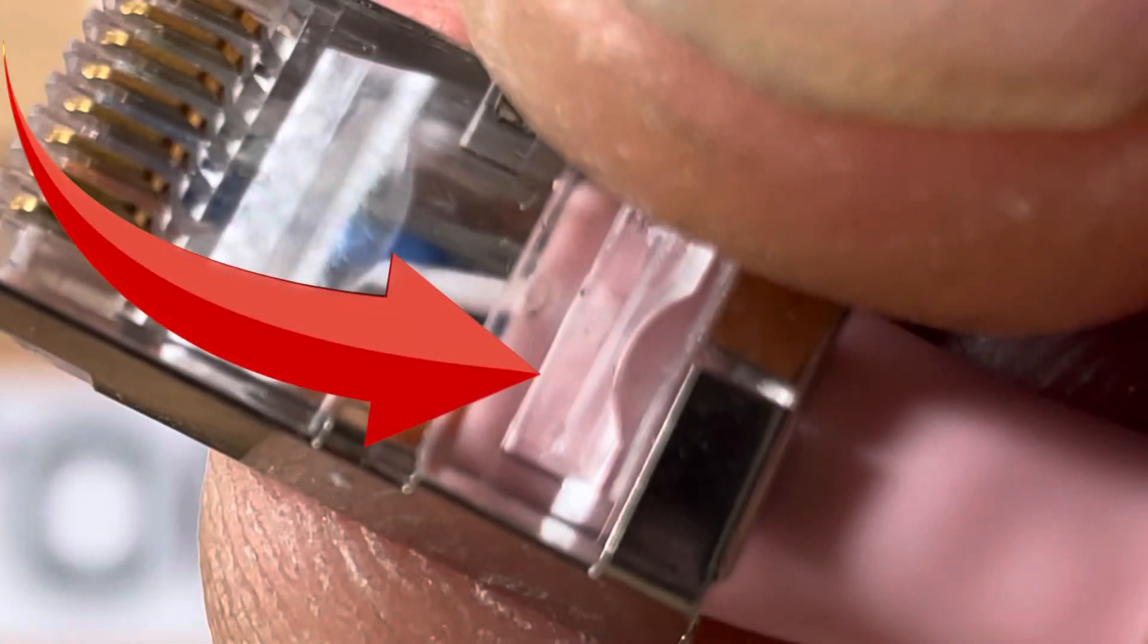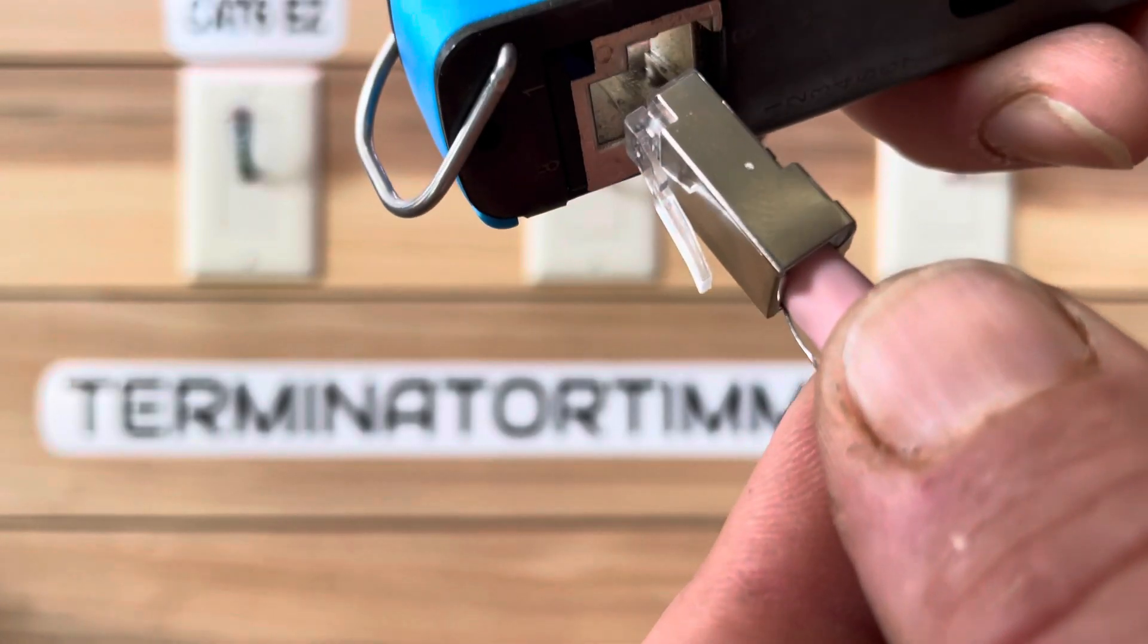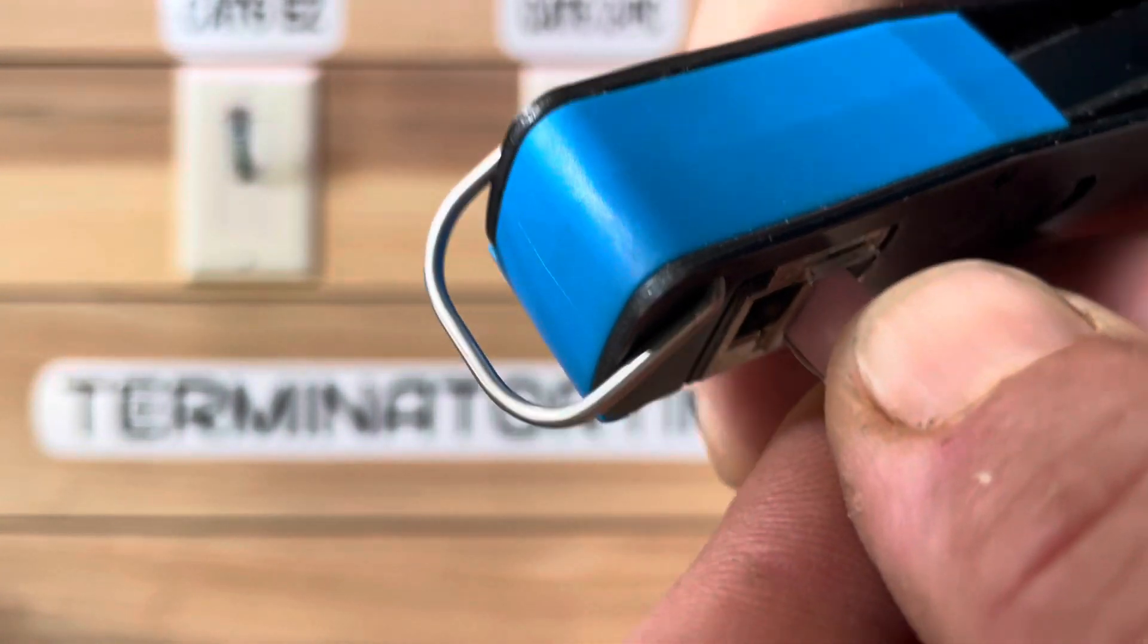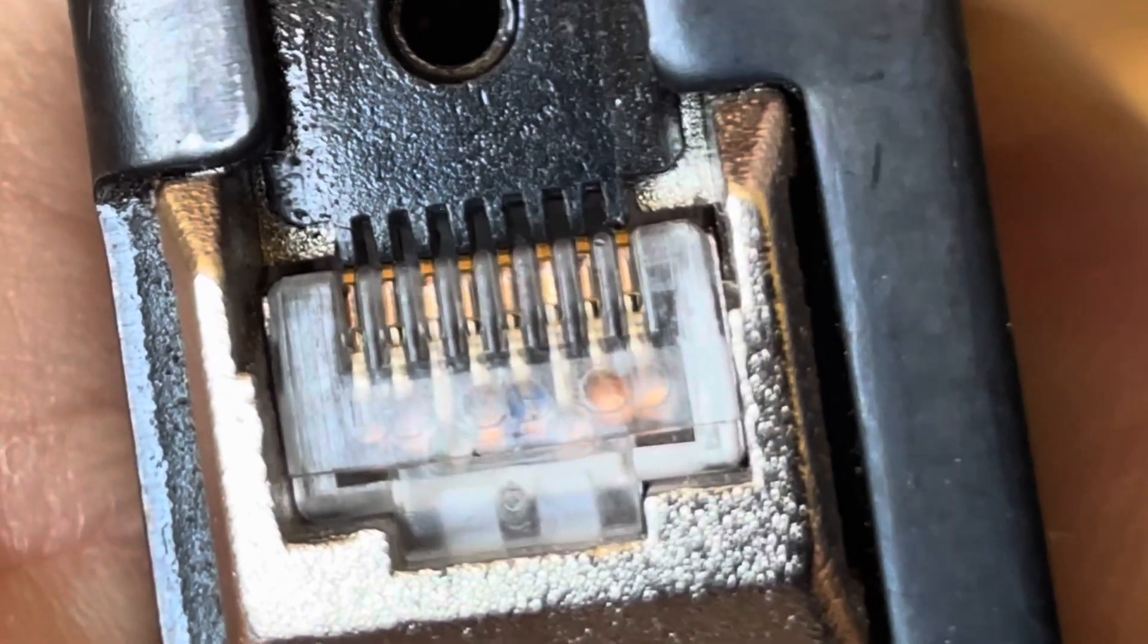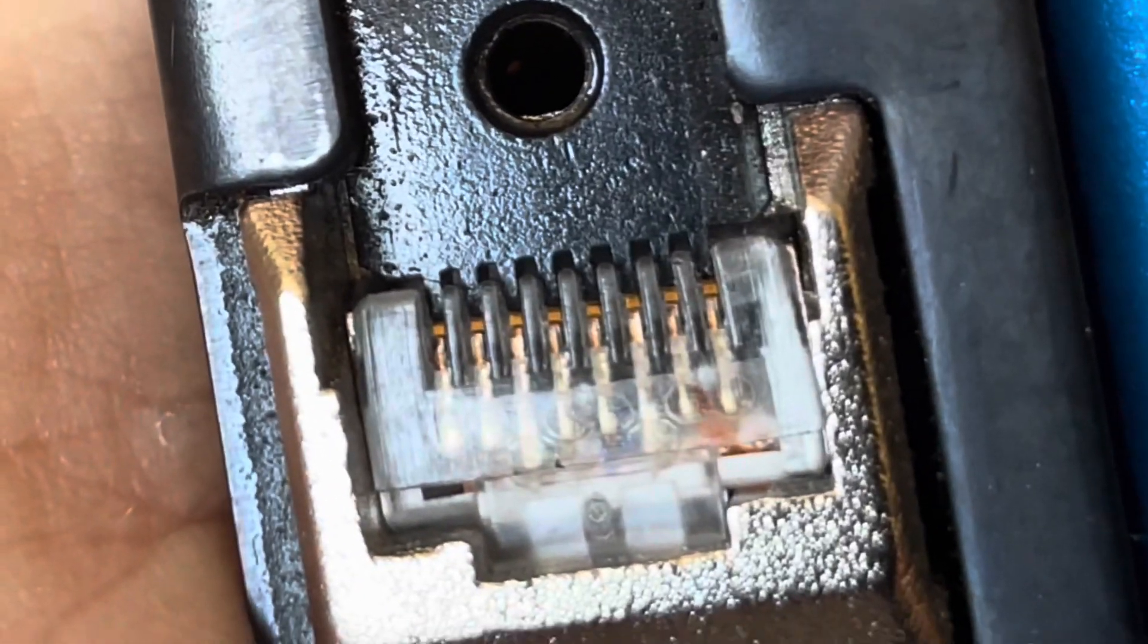Make sure the jacket is in the crimp spike to avoid any loose wires. Insert the connector into your crimp tool. With a firm squeeze, the wire will be terminated.